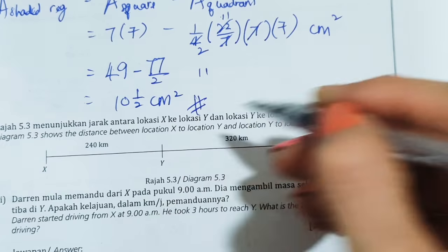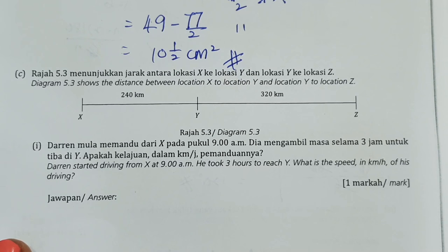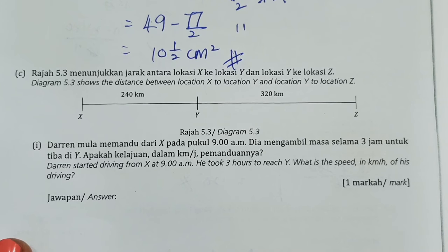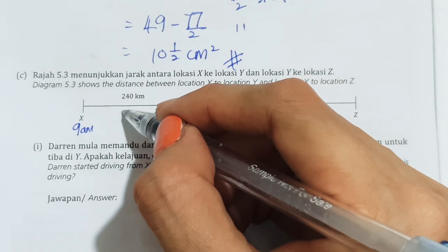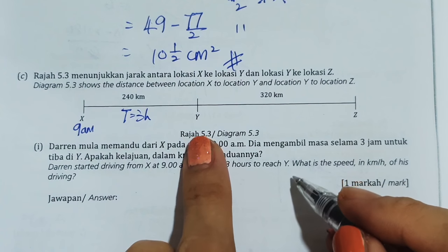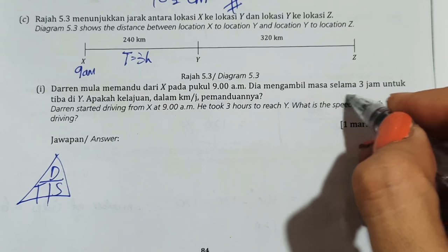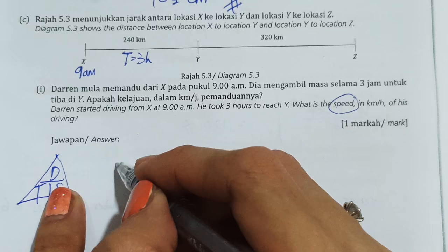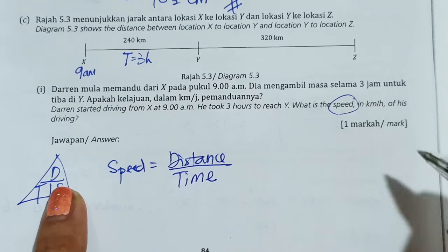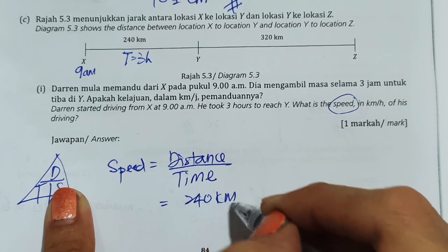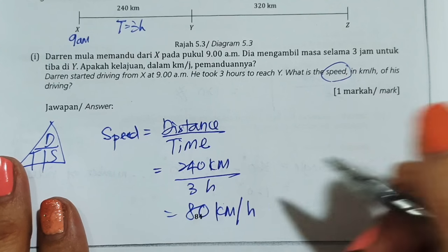Darren starts driving from X at 9 a.m. The distance X to Y is 240 km and he took 3 hours. Using speed = distance/time: speed = 240/3 = 80 km/h.